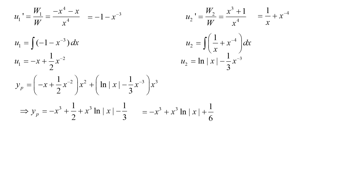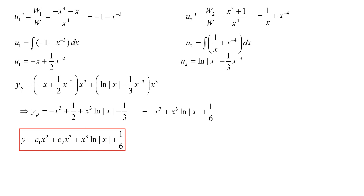Combining yp with the complementary function, the overall solution is y = c1 x² + c2 x³ + x³ ln x + 1/6. Note that the -x³ term from yp is absorbed into the c2 x³ term, so it need not be written explicitly, though leaving it in is also correct.